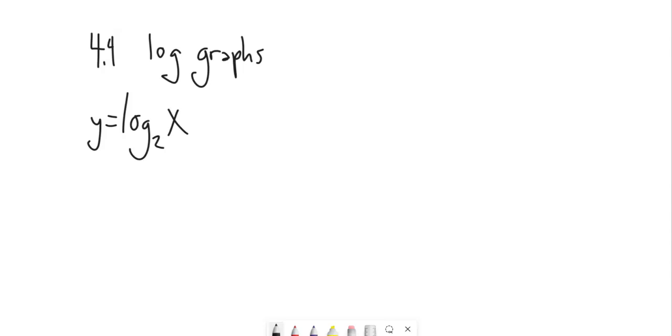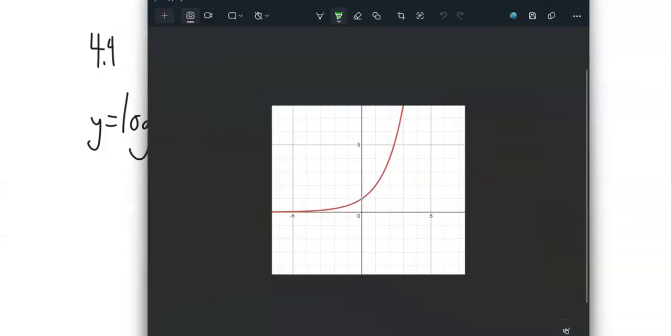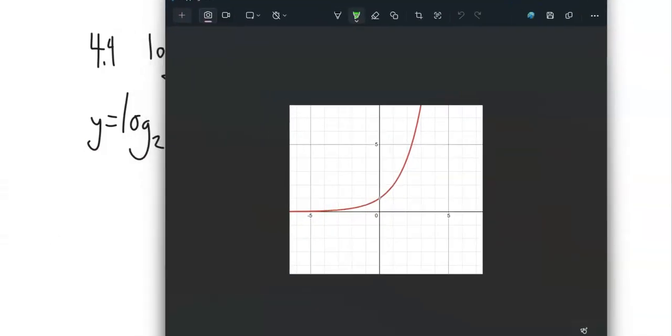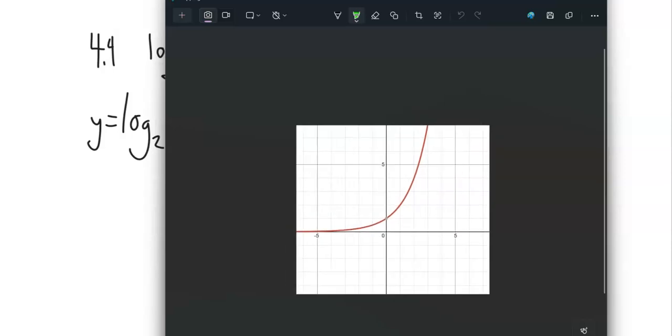So let me look at a quick graph of 2 to the x. What I want you to notice is think about the points that this goes through. This goes through the point (0,1), goes through the point (1,2), goes through the point (2,4). This is 2 to the x.